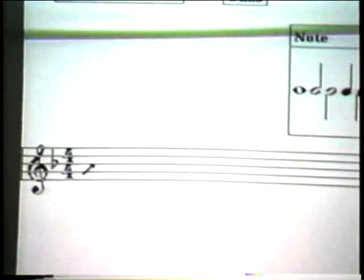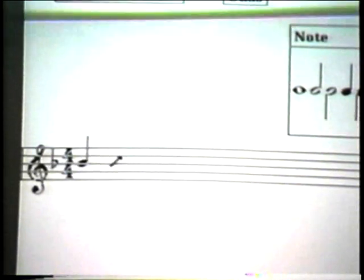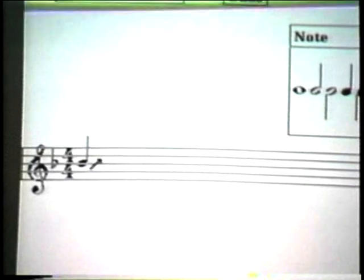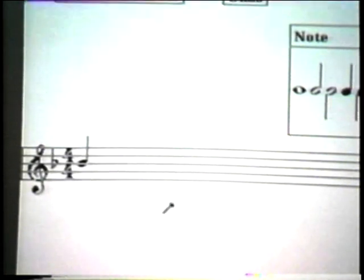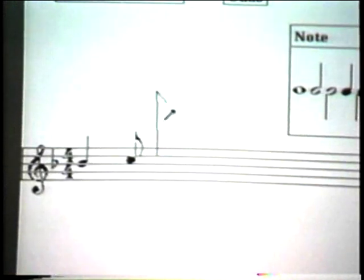A quarter note B with an upstem, I would simply draw an upstroke starting on the B line. To get an eighth note, I add a flag to that. And to make a sixteenth note, I have two corners in the gesture.